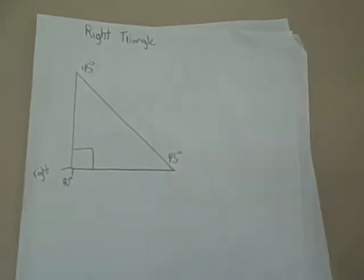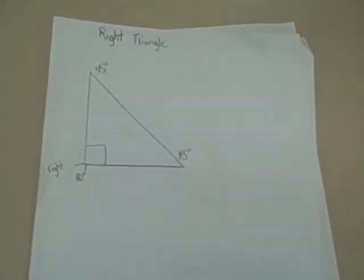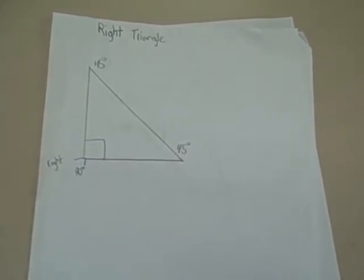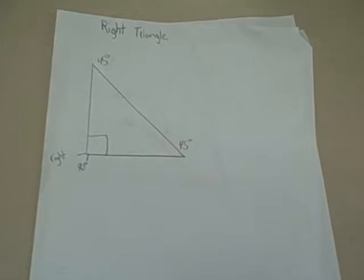Right, obtuse, and acute are all different because of the size of their angles. On a right triangle, there is only one 90 degree angle.